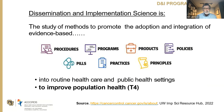D&I science is perhaps the most frequently misunderstood — our colleagues in Canada and Europe actually call it translation science. One of the most widely used definitions is that D&I science is the study of methods to promote adoption, integration, and sustainment of evidence-based procedures or programs. In the center we use the seven P's — because it's not just interventions, but also products, policies, and principles — all the way to population health or T4 impact.